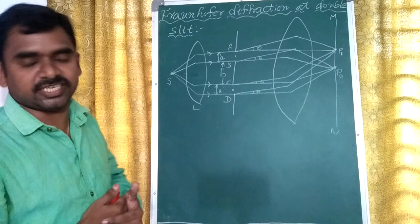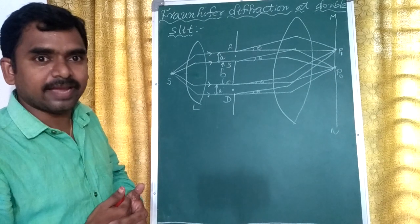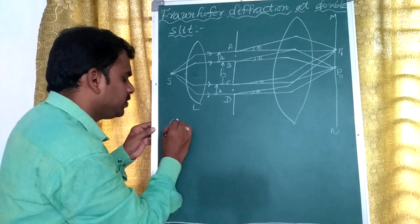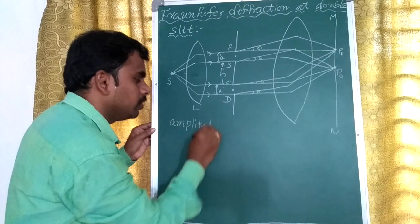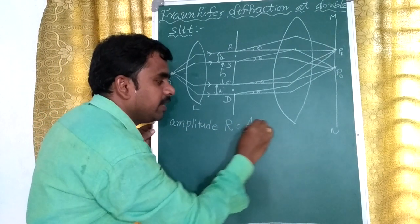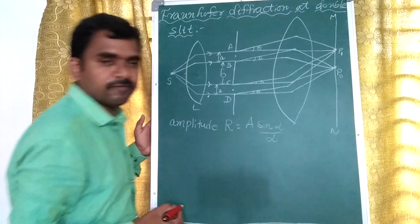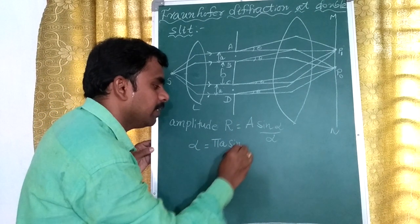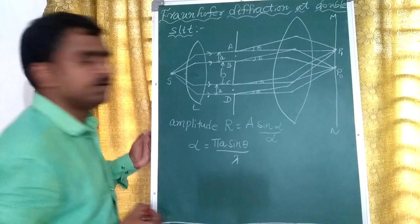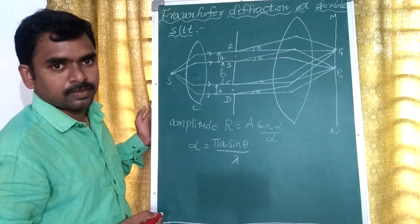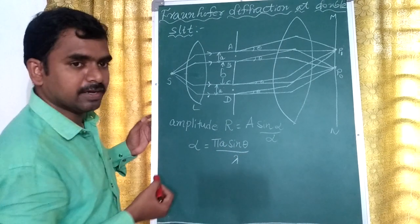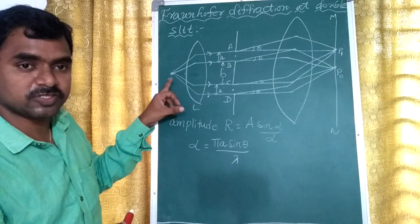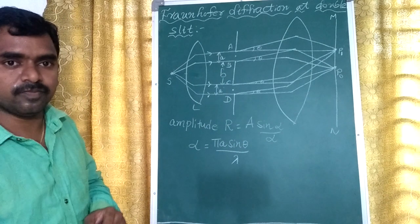Previously in our single slit experiment, we calculated the amplitude for a single slit. The resultant amplitude R equals A sinα/α, where α equals πa sinθ/λ. Here, 'a' is the width of the slit, lambda is the wavelength of the source of light, and theta is the angle of diffraction.